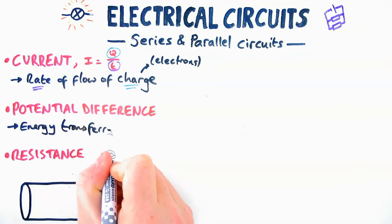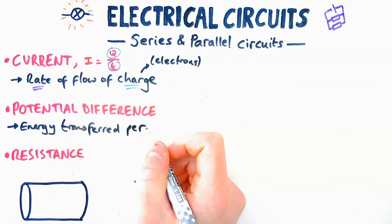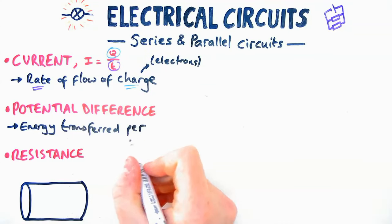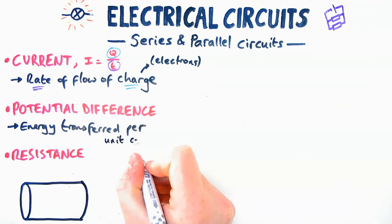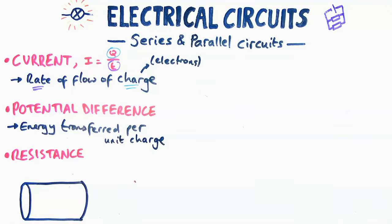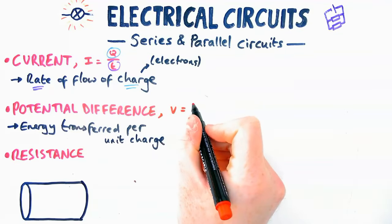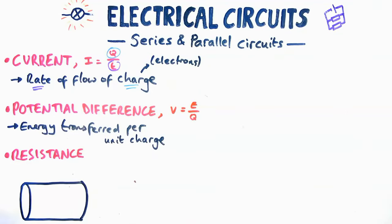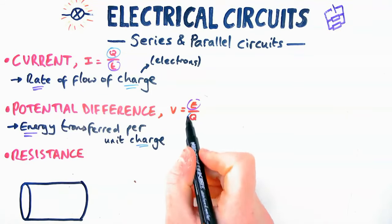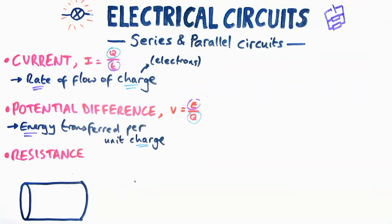Potential difference isn't the flow of charge but it's the energy transferred per unit charge. To each coulomb of charge you have energy that's transferred by the cell or taken out by a bulb. The way to remember that is that potential difference equals E over Q, energy divided by charge. You can remember these definitions if you can rearrange those two equations.